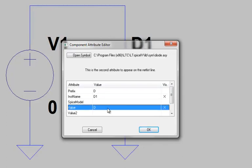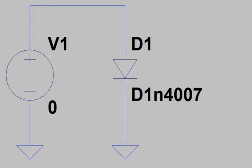Next, we need to edit the value for the symbol to coincide with the name in the dot model statement. And if you recall, that was D1N4007. Once we've added that, we can then click OK, and now we have a symbol to represent that third-party model in our schematic.